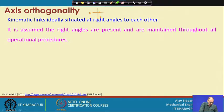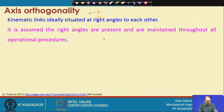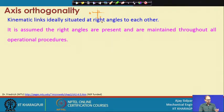It is assumed that the right angles are present and maintained throughout all operational procedures. Now there are two ways that in a static condition we can get this done. But when the machine is in motion, there are additional forces and vibration which may create problems — you may not get a straight line, and even if it is a straight line there may be some variation within it.